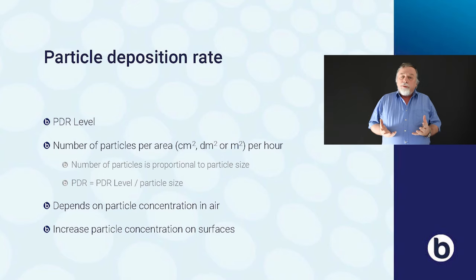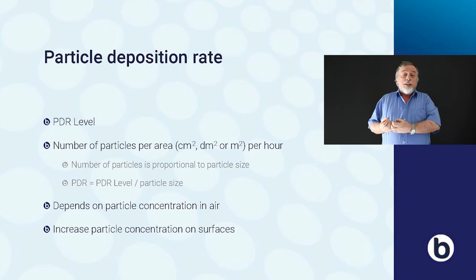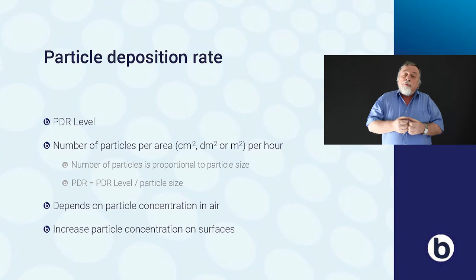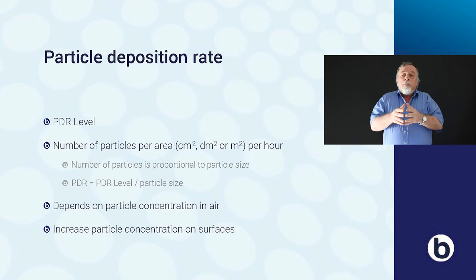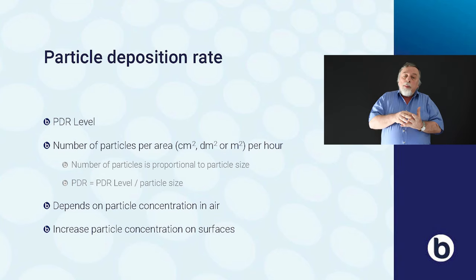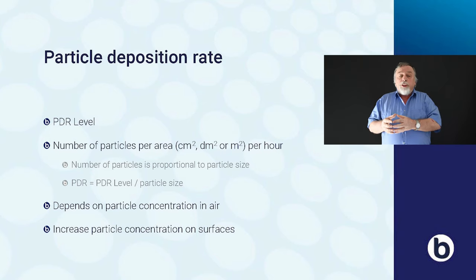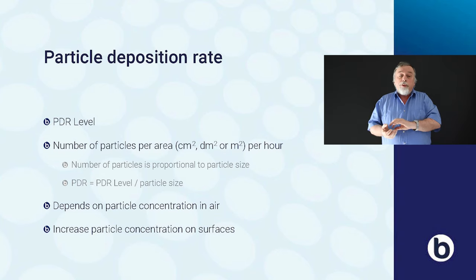Particle deposition rate is the number of particles larger than a particular size d (in micrometers) per area per hour. A particle deposition rate level is independent of particle size and gives a general level of particle deposition in the clean room, expressed in number of particles per area — in square centimeters, square decimeters, or square meters — per hour. The number of particles that deposit is proportional to the particle size. The particle deposition rate can be found by dividing the particle deposition rate level by the particle size d.